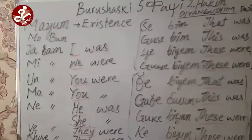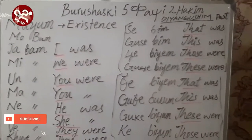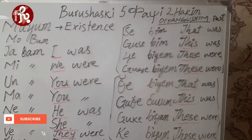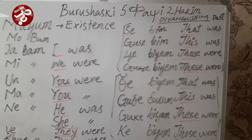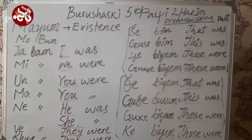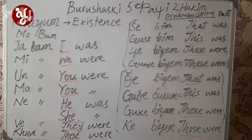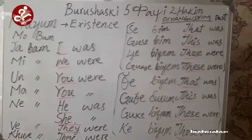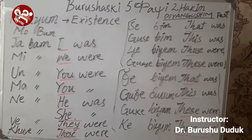This is the fifth chapter, Chendium Phatri, second lesson, Atom Hakim, about Mayum — the existence — in the tense Dhyang Gushim, the past tense.